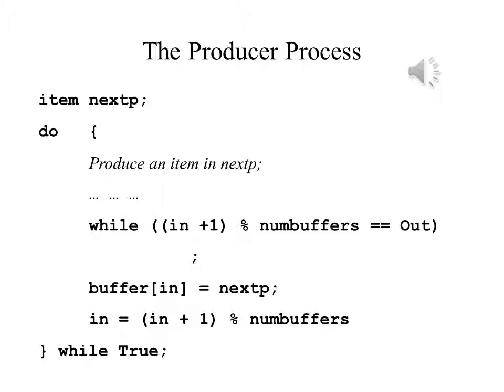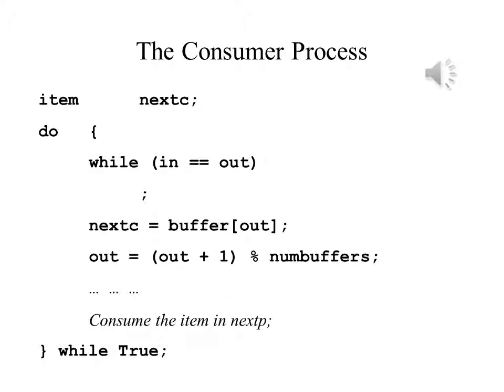Once it ascertains that there is an available spot, or after it waits for one to become available, it places the item in the buffer and then updates in so the consumer process knows that an additional item has been added. In the consumer process, the waiting comes first because there may not be an item to consume. If there is nothing in the buffer, it will have to wait until there is. Once there is something in the buffer, it will consume it and update out so the producer process knows that the slot is available.